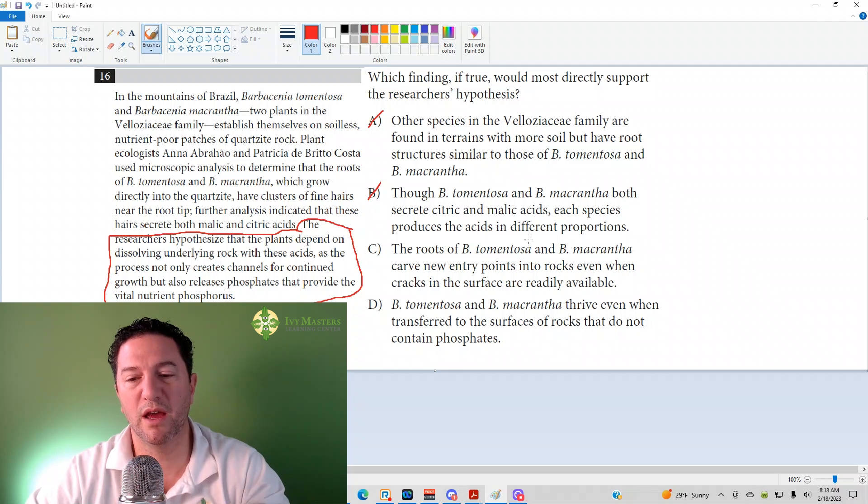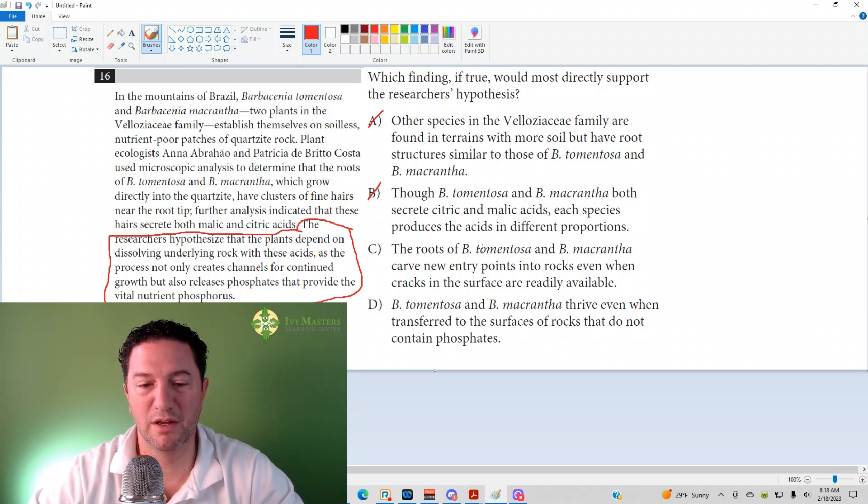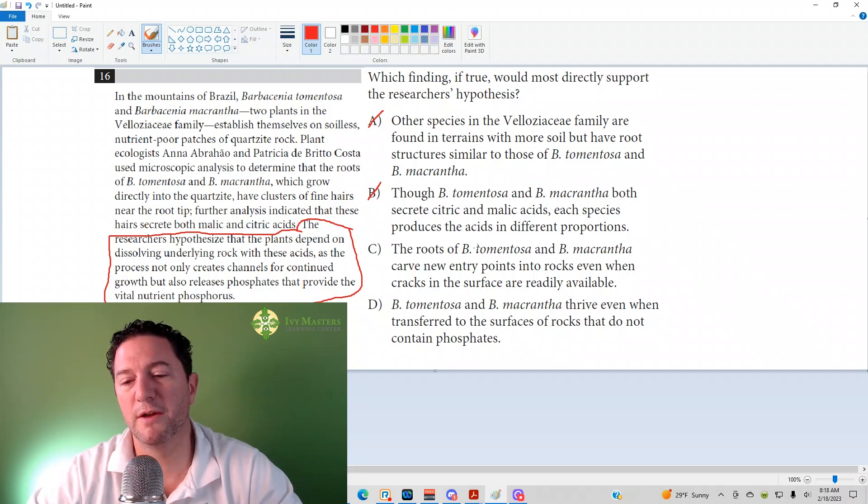Answer choice D, B. tomentosa and B. macrantha thrive even when transferred to surfaces of rocks that do not contain phosphates. Well, it says that it needs a nutrient phosphate, so that actually takes away from what it's saying a bit. Answer choice C is going to be your correct answer here.